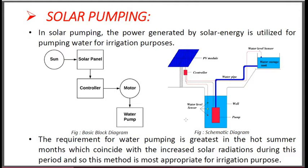This is the schematic diagram for the solar pumping system. It mainly consists of PV module, charge controller, water level sensor, well pump, water storage tank, water level sensor, and water pipe. The water level sensor senses the position of water in the well and gives a signal to the controller. If it gives the green signal, then the motor starts, supplying water to the water storage tank. The second water level sensor senses when the tank is full and switches off the motor.